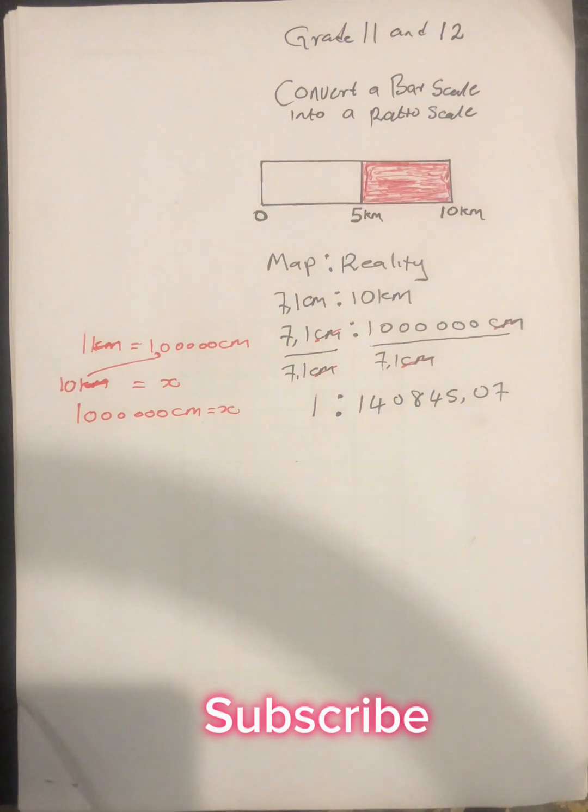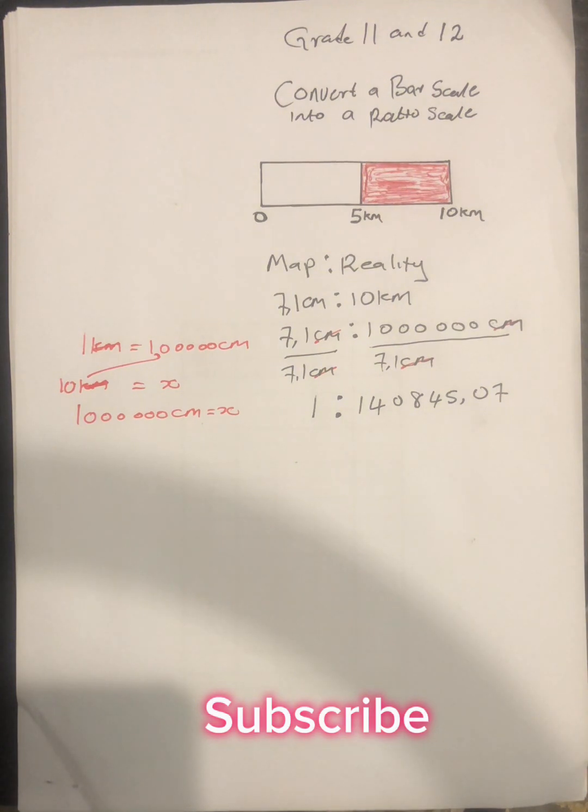That is our ratio scale, which is 1 is to 140,845.07. We know that 1 unit on the map is equivalent to 140,845.07 units in real life.